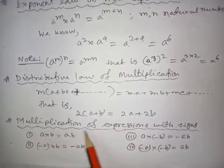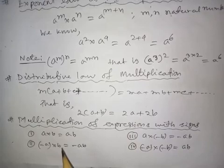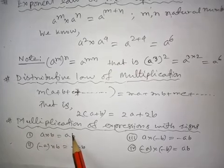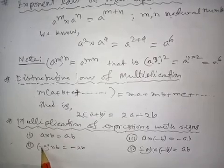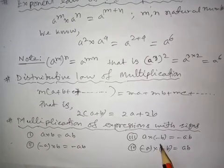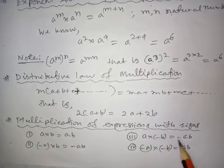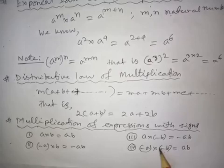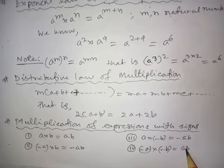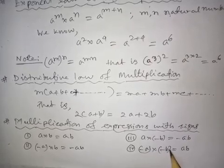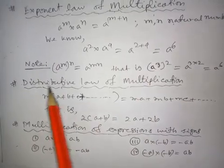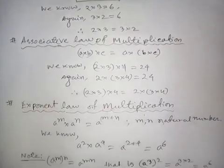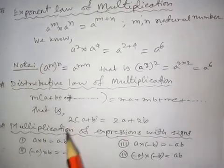Next is multiplication of expressions with signs. If A and B are two algebraic expressions, their product is AB. If there is a minus sign before A multiplied by B, the result is minus AB. If there is a minus sign before the second expression, the result is also minus AB. If both expressions are negative, their product is positive AB, because minus times minus equals plus. If we know these laws carefully, multiplication of algebraic expressions will be much easier for us.